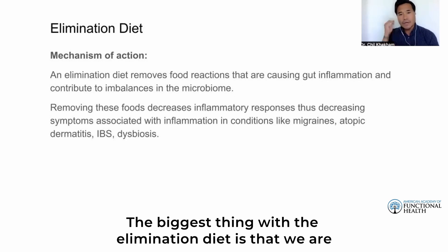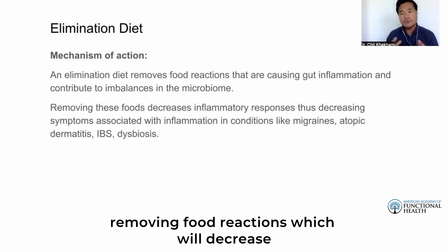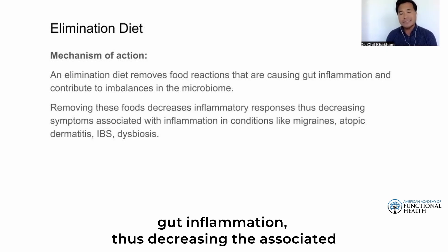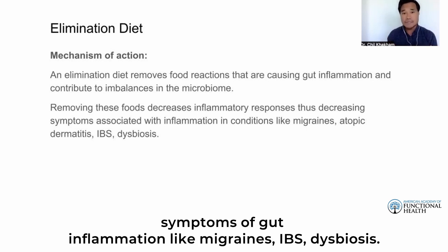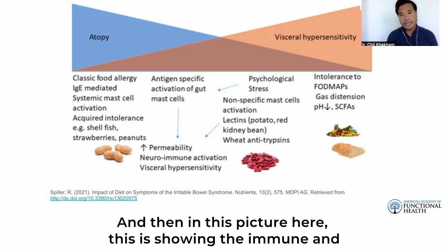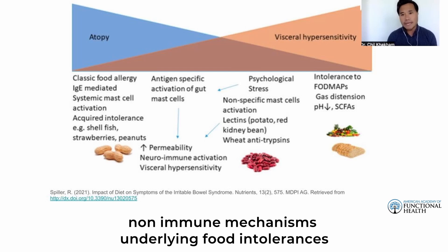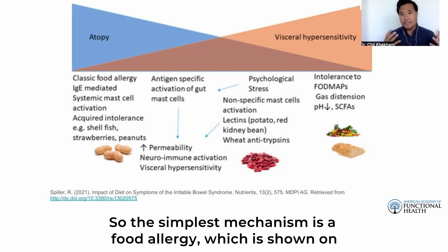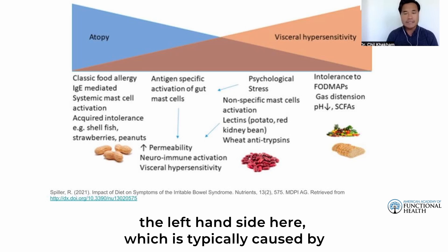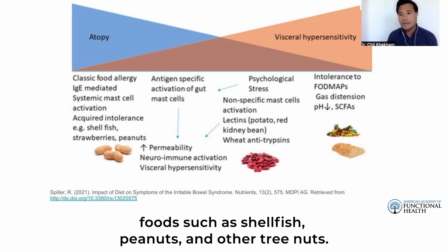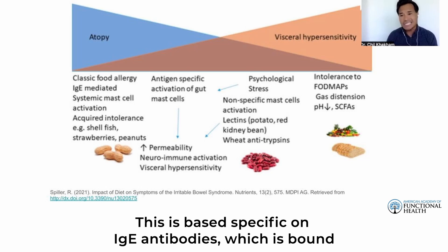The key mechanism of the elimination diet is that we are removing food reactions, which decreases gut inflammation, thus decreasing associated symptoms like migraines, IBS, and dysbiosis. This image shows the immune and non-immune mechanisms underlying food intolerances, particularly in IBS. The simplest mechanism is a food allergy, shown on the left, typically caused by foods such as shellfish, peanuts, and other tree nuts, and is based on IgE antibodies bound to the surface of mast cells found throughout the body.